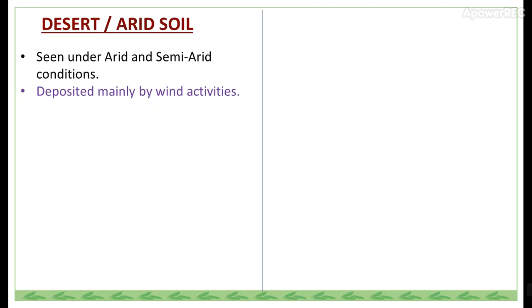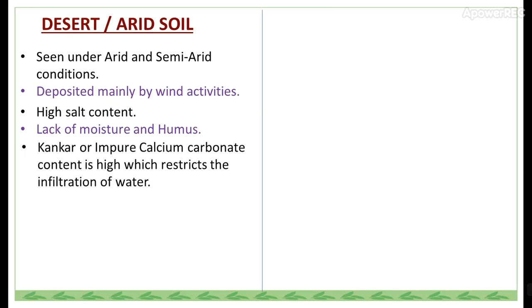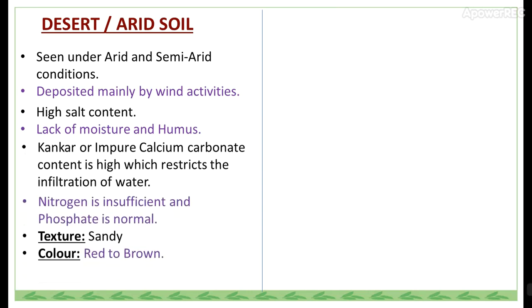Desert or arid soil is seen under arid and semi-arid conditions, and is deposited mainly by wind activity. Salt content is very high and there is a lack of moisture and humus. Kankar or impure calcium carbonate content is high, which restricts the infiltration of water. Nitrates are insufficient and phosphate is normal. The texture is mainly sandy, and the color is red to brown.